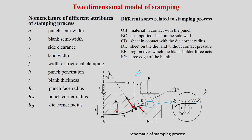B is the blank semi-width — one half of the total sheet width from the axis to the edge. C is the side clearance between the punch and the blank holder or die. Appropriate clearance must be maintained: if clearance is less than the sheet thickness, ironing will occur; too large a clearance will also create defects. E is the land width — the region where no compression or blank holding force acts.